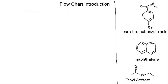The first compound is parabromobenzoic acid. Notice that we have benzoic acid here, which is a functional group that can act as an acid and will act as an acid especially in the presence of a base. The other compound is naphthalene, which does not have a functional group that will act as an acid or a base, so this is referred to as a neutral organic compound. We also have ethyl acetate, which is going to be our organic solvent.